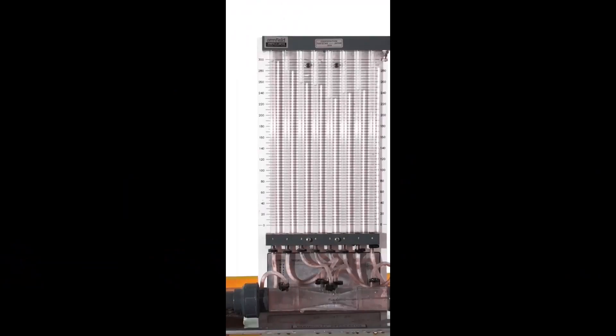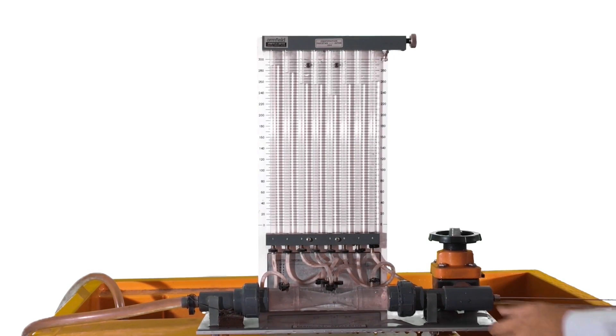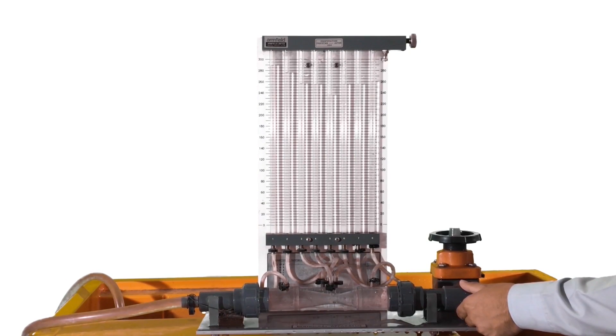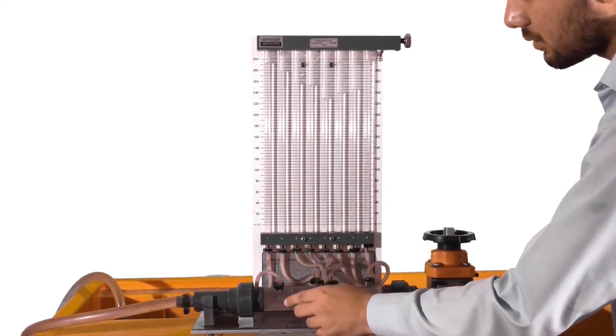You can observe that we are pulling out the hydrometric probe. Initially, whatever readings we were having on the manometer were all actual static head values. As we pull out the hydrometric probe, we are getting the actual total head at each tapping point in the eighth manometer tube.